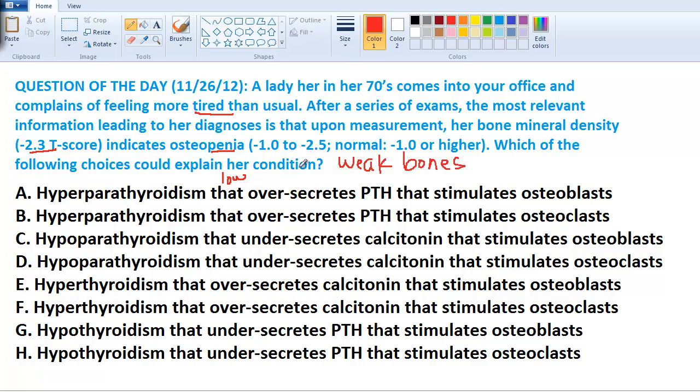Which of the following would explain her condition? So we get into here. We have a couple choices between hyper and hypothyroidism and then we also have PTH, calcitonin, and then we talk about blast versus clast. So let's look at that quickly.